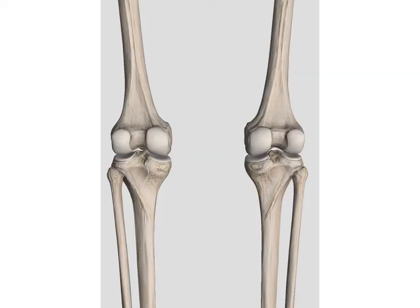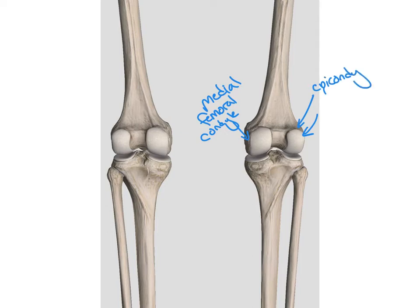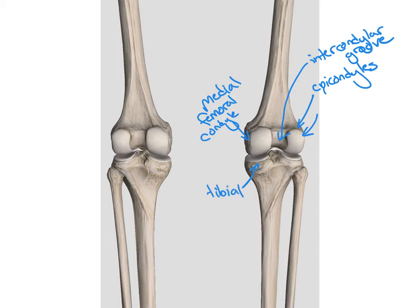Looking at the posterior side, we can still see our medial femoral condyle as well as our lateral femoral condyle. Then we can see the epicondyles, both medial and lateral. Looking at the posterior side of the femur, the area between the condyles is called the intercondylar groove. We can still see our medial and lateral tibial plateau, as well as our proximal tibiofibular joint. This articulation between the tibia and the femur is our tibiofemoral joint.